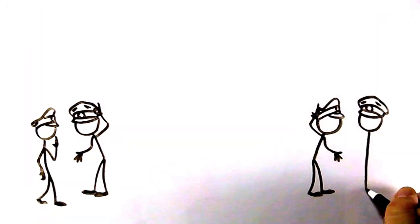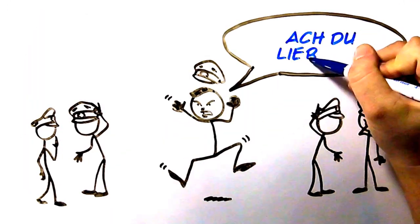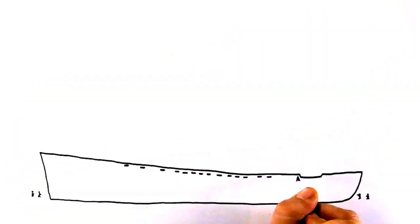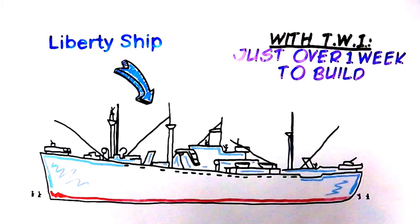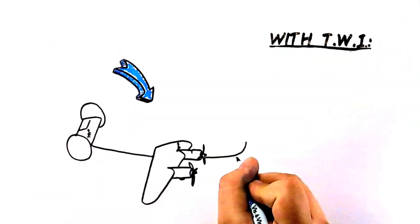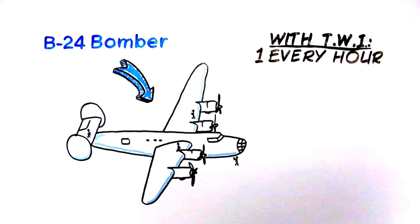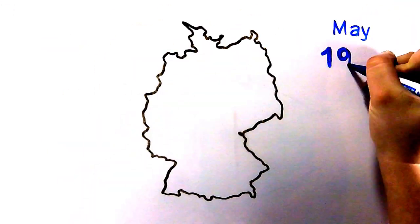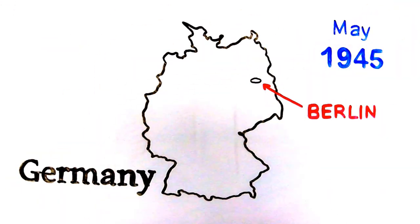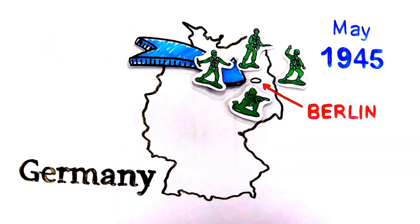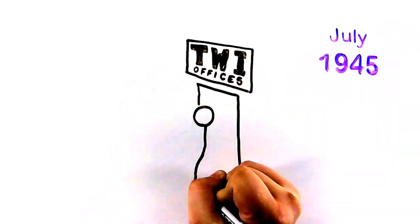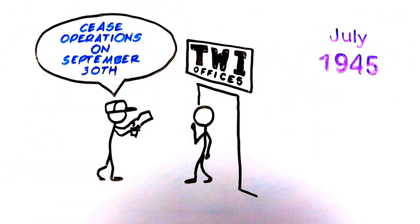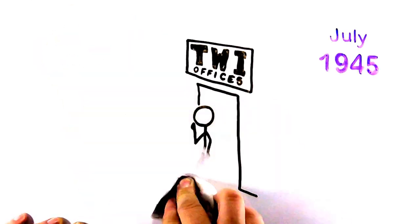The Axis powers could not understand how the Allied forces could have created so much material. TWI allowed the United States the ability to build a Liberty Ship from start to finish in just over a week. By the end of the war, the TWI workers were able to produce one B-24 bomber an hour. In May of 1945, after the Western Allies and Soviet Union invaded Germany and succeeded in the capture of Berlin, Germany surrendered unconditionally.